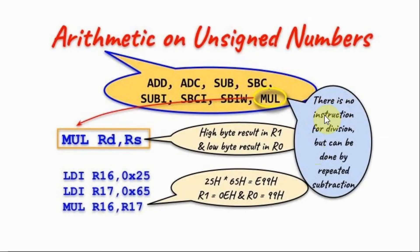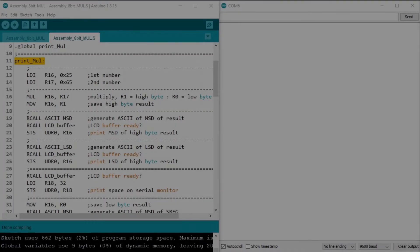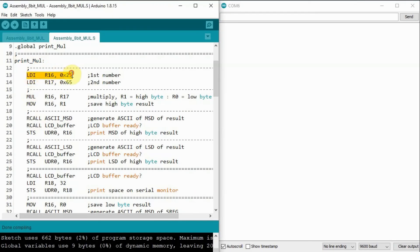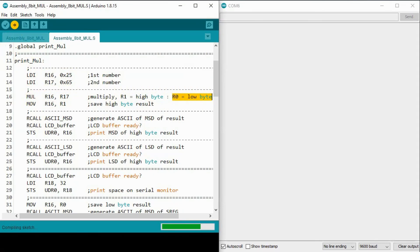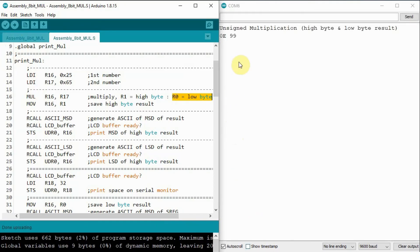Note that there is no instruction for division in AVR assembly, but we can achieve division indirectly by repeated subtraction — this will be demonstrated in a future video. In this next example, we demonstrate the multiplication operation, noting on the serial monitor the 16-bit product.